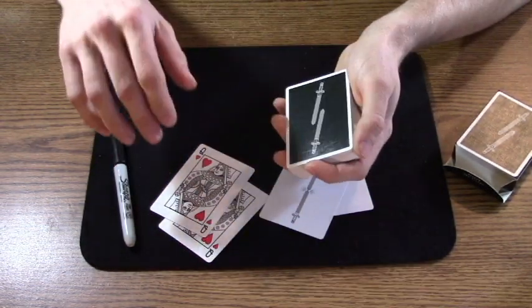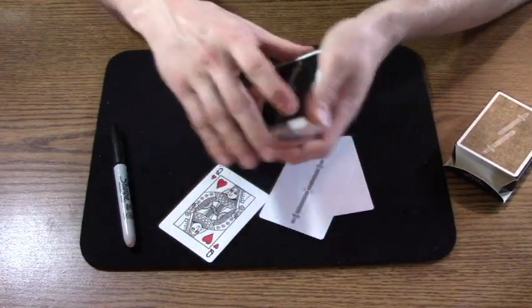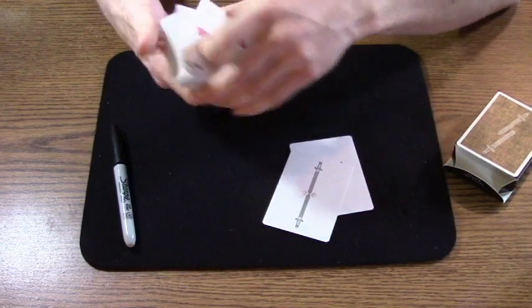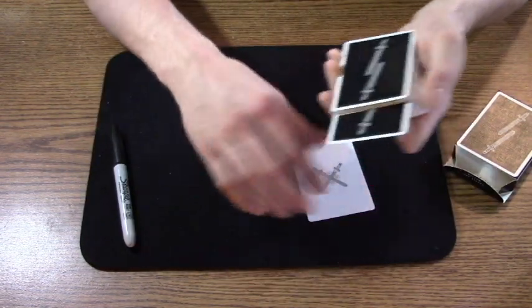So I set the deck up like this: the card I'm gonna force goes on top, the other Queen of Hearts is gonna go second from bottom, and then the two jokers go in random positions in the deck.